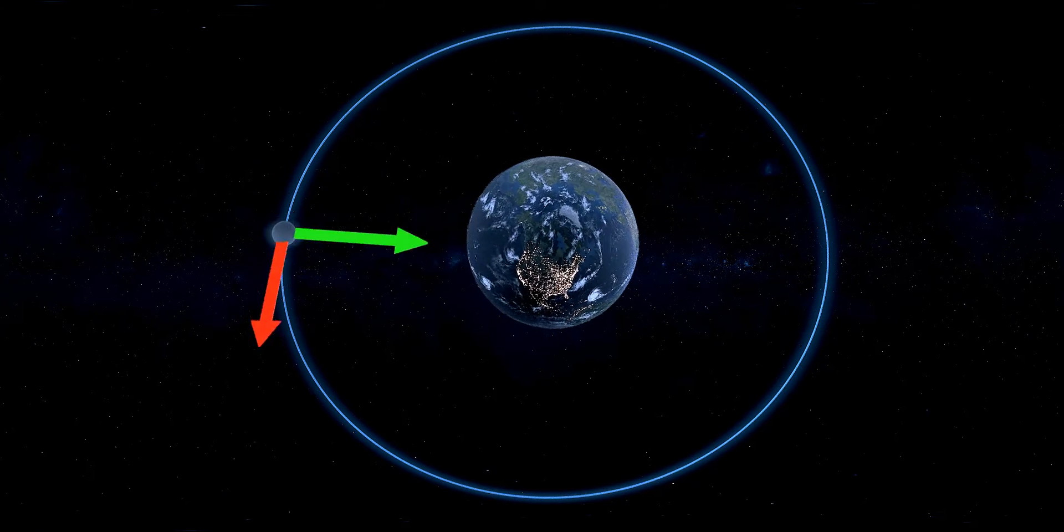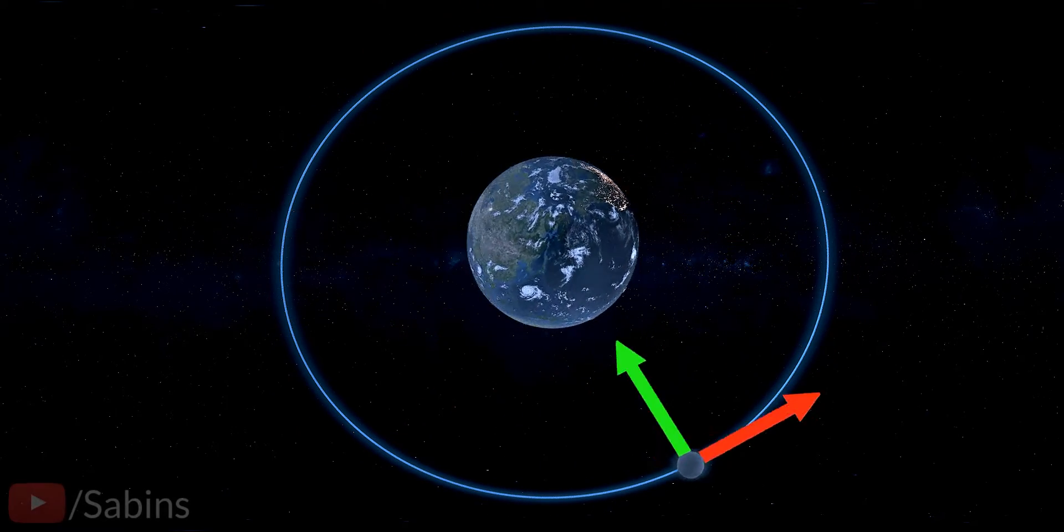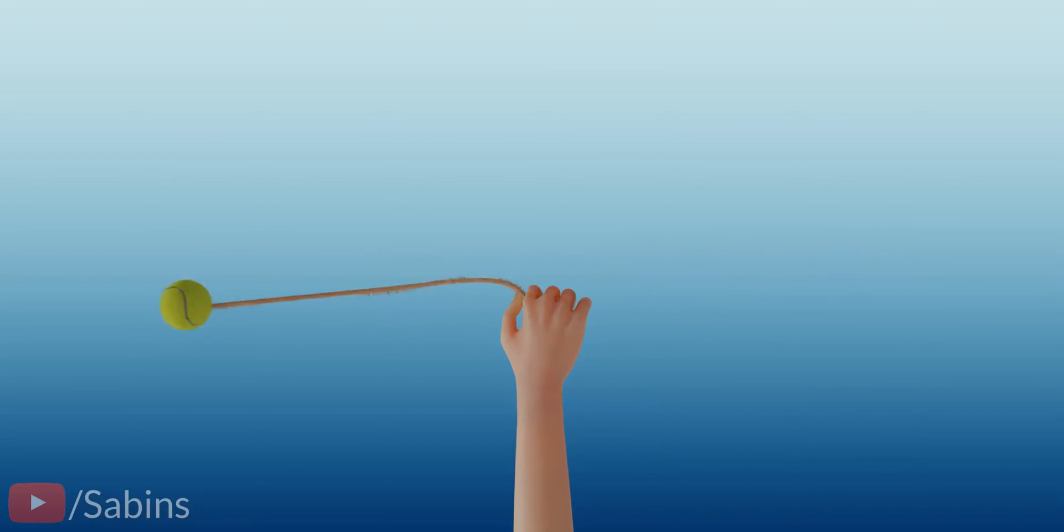When the Moon revolves around the Earth, the gravitational force acting between the Moon and the Earth provides the necessary centripetal force. Similarly, when you rotate an object attached to a string, the tension in the string provides the required centripetal force.